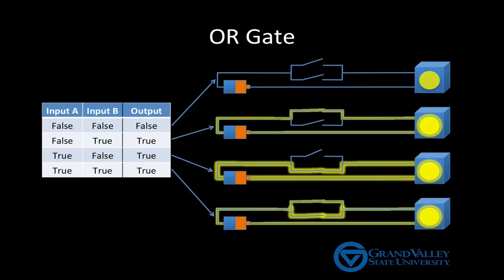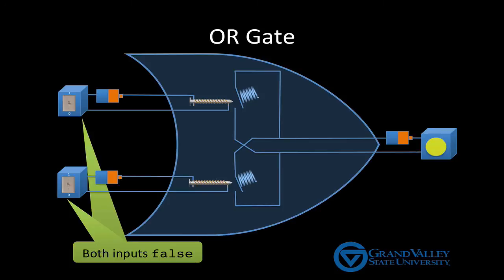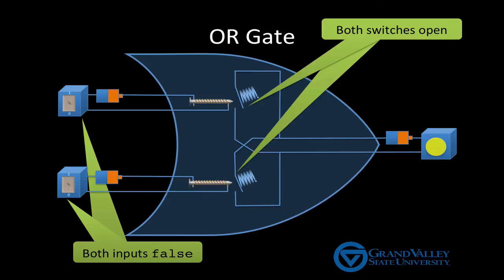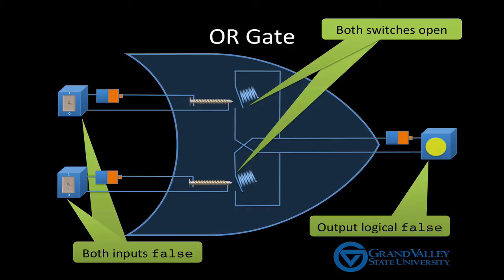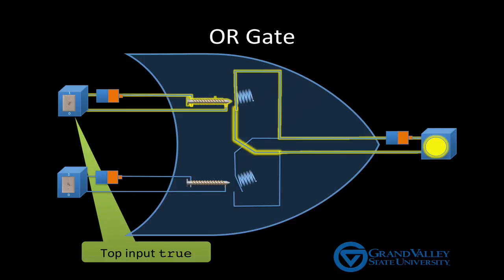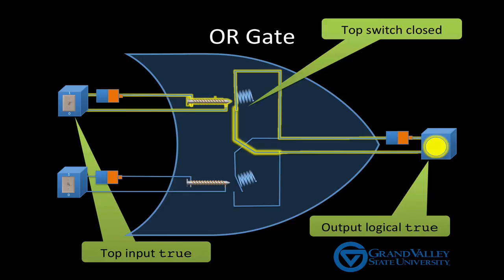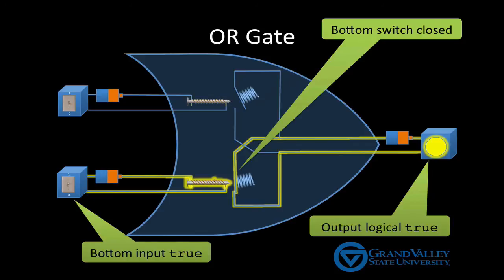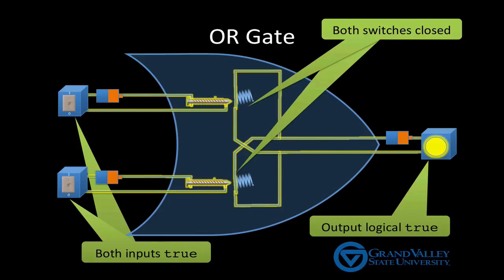As with the AND gate, we can now connect these switches to springs and magnets. When both inputs are FALSE, the springs hold both inner switches OPEN, producing a logical FALSE output. Turning one input to TRUE closes one of the two paths through the output circuit, either the top, as we see here, the bottom, or both. This spring and magnet mechanism we used is called a relay.